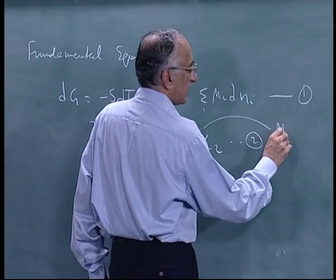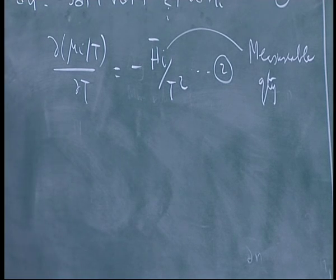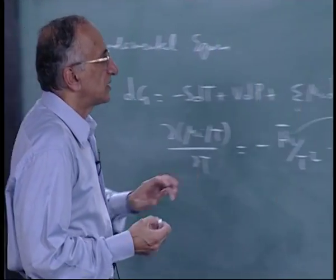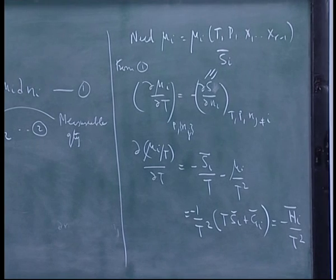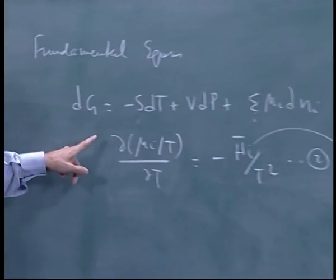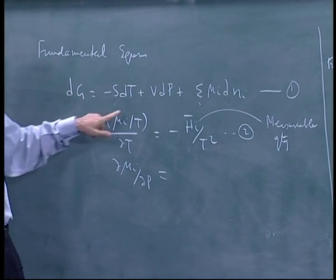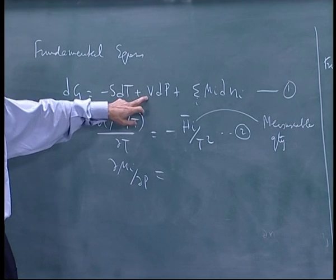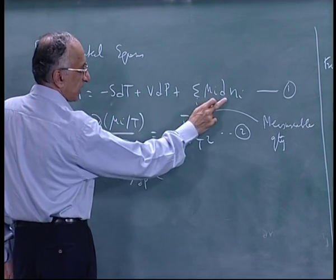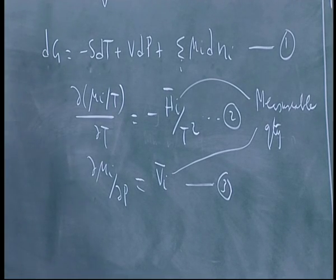I will show how H̄ᵢ is actually measured a little later; we simply note it is a measurable quantity. Similarly, ∂μᵢ/∂P equals ∂²G/∂nᵢ∂P, which gives ∂V/∂nᵢ = V̄ᵢ. This is equation 3 and also a measurable quantity. Volume changes and enthalpy changes are measurable, and from these changes I can calculate H̄ᵢ and V̄ᵢ.